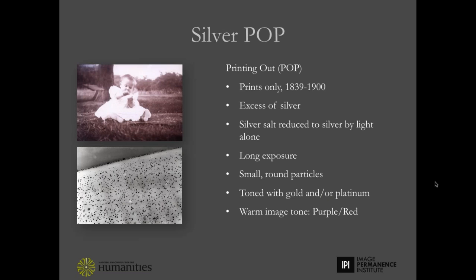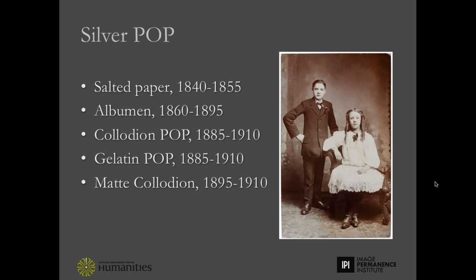Now I want to turn our attention to photographic prints. The print is usually made from the negative, and it's a positive image on an opaque support. 19th century silver-based prints are all printed out — the silver halide is reduced to silver image by exposure to light alone, with no development necessary. The ratio of silver to halide includes an excess of silver, which produces really small round image particles and in turn gives us a warm image tone.